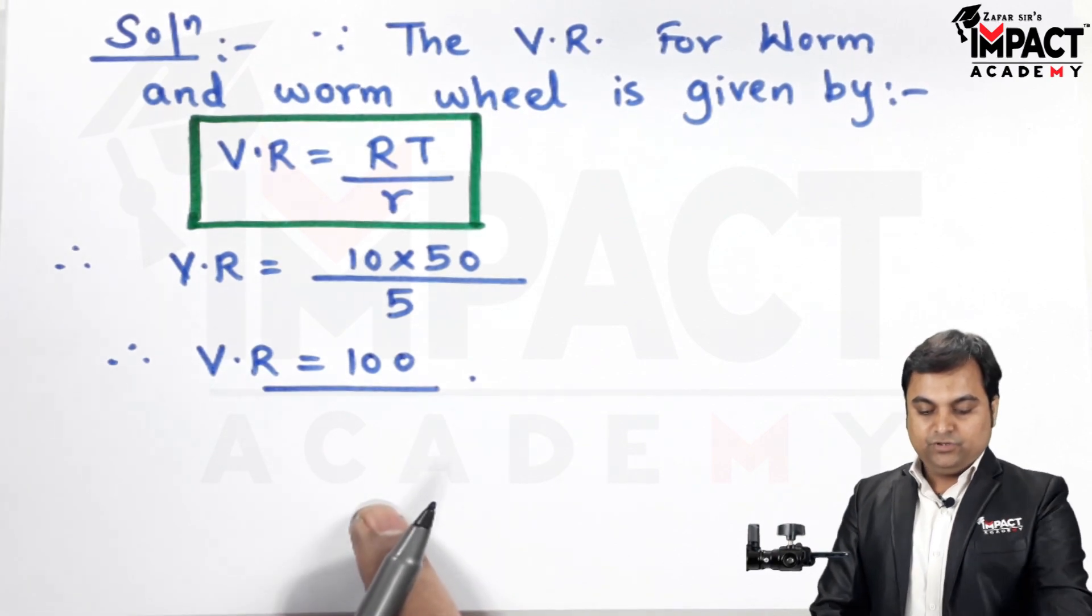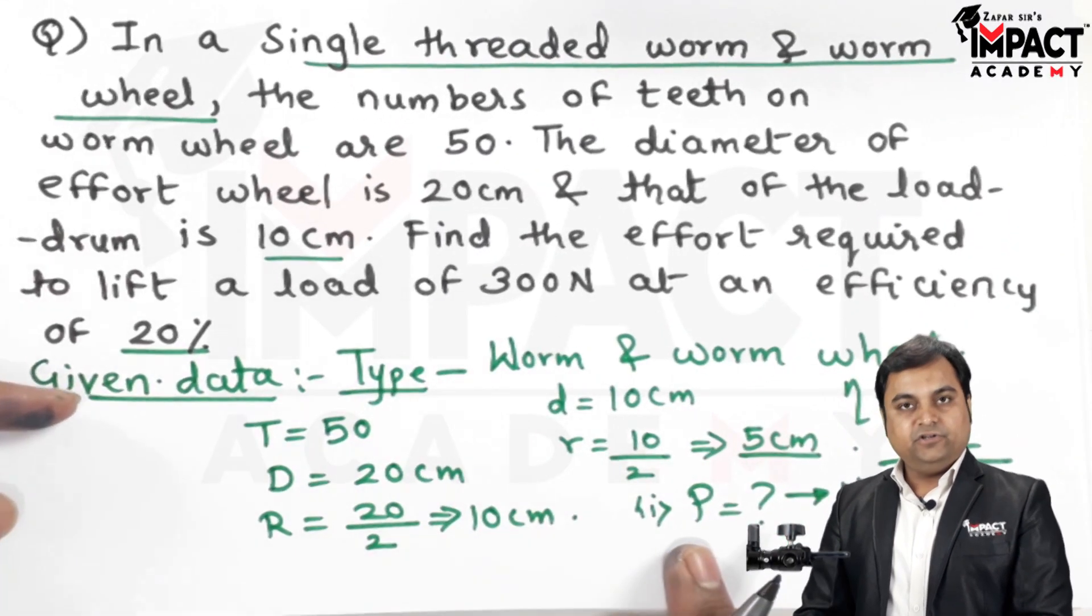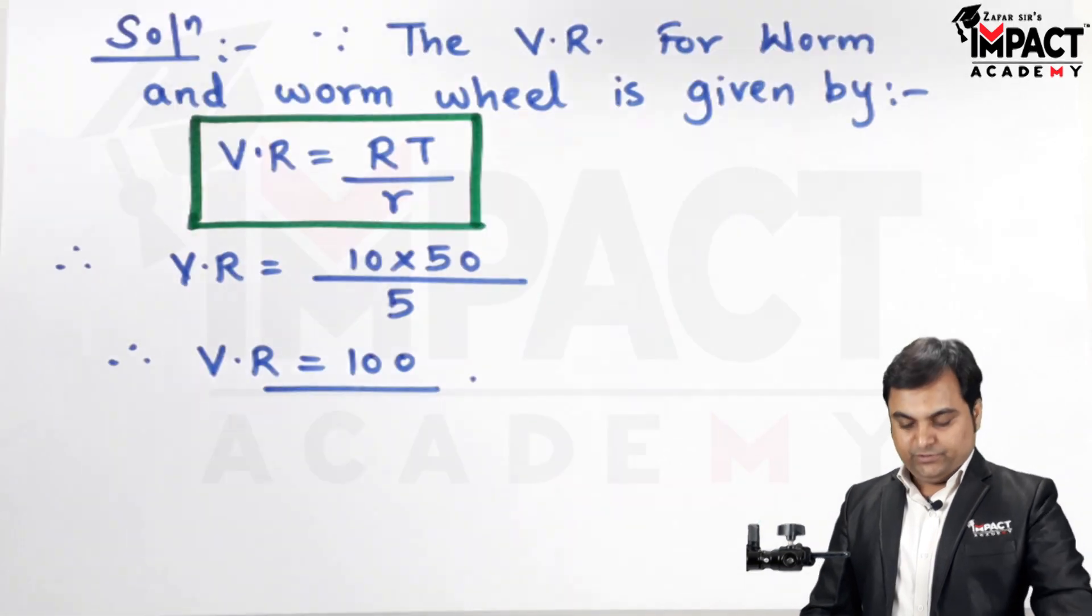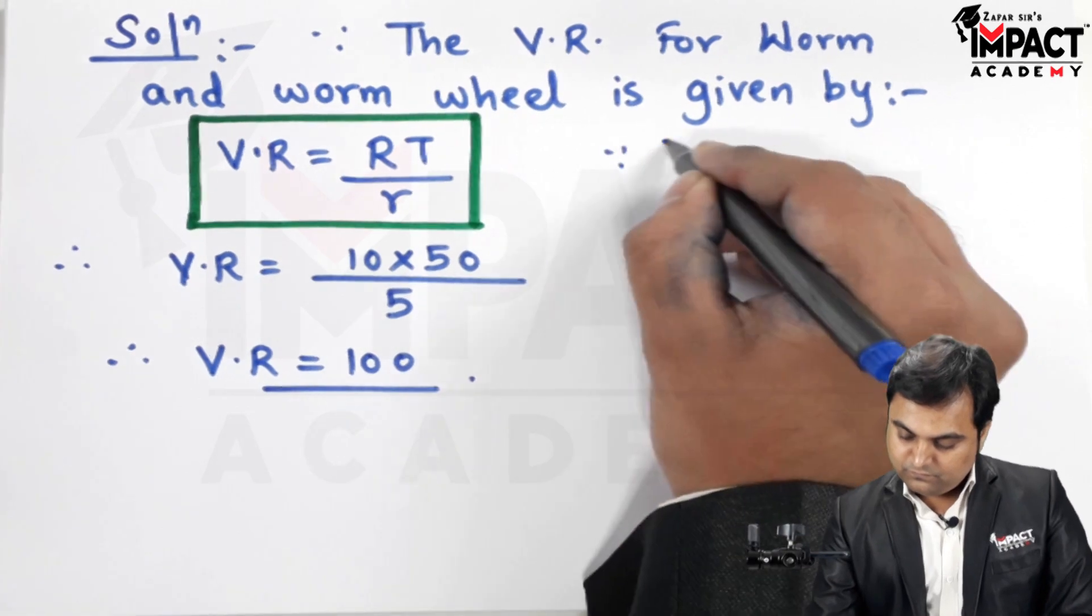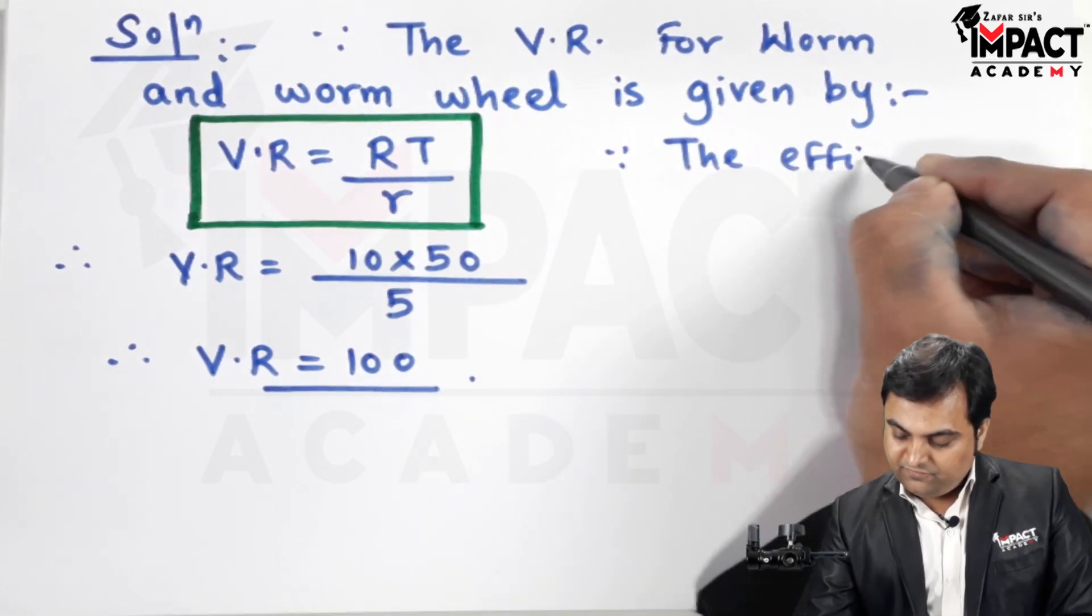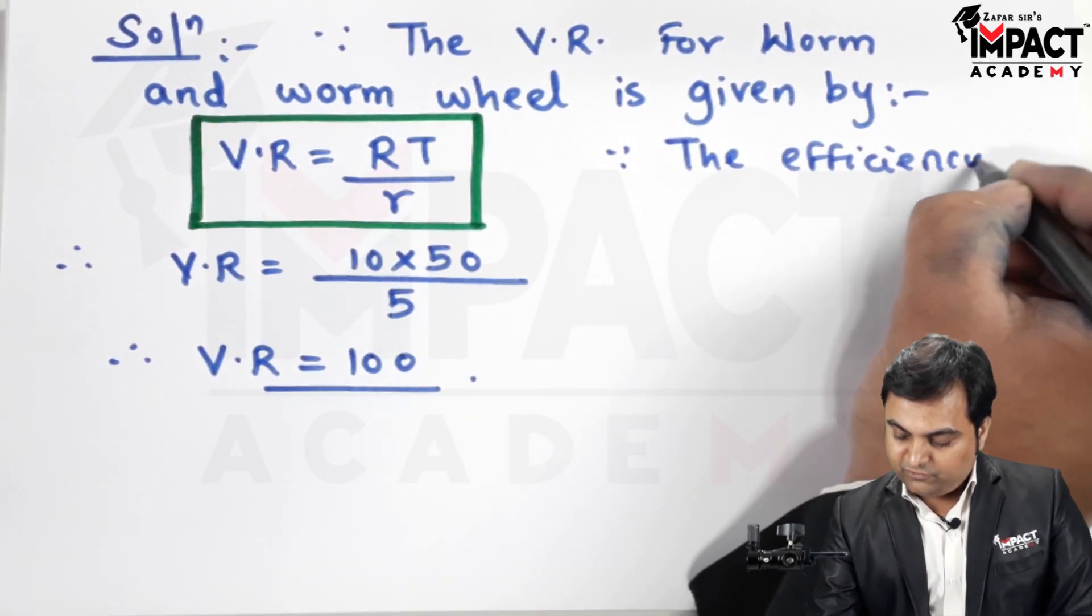Next, after getting the velocity ratio, the question is to find the amount of effort required to lift a load of 300 Newton. So for that I'll use the efficiency formula, and this efficiency formula is a general formula for all the machines.